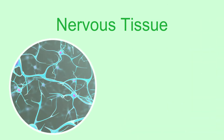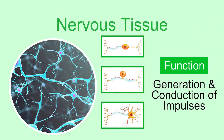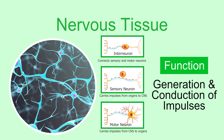Nervous tissue is made up of nerve cells or neurons that are responsible for generation and conduction of impulses. Sensory neurons receive impulses from organs and carry them to the central nervous system, or CNS. Motor neurons carry impulses away from the CNS to the muscle tissues and glands. Associative neurons, or interneurons, are located in the CNS and connect sensory to motor neurons.